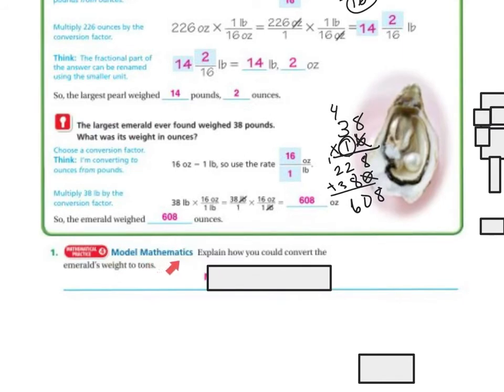Model mathematics: explain how you could convert the emerald's weight to tons. Well, what I could do is I could multiply 38 by the conversion rate of 1 ton equals 2,000 pounds, because that's how many pounds are in a ton.